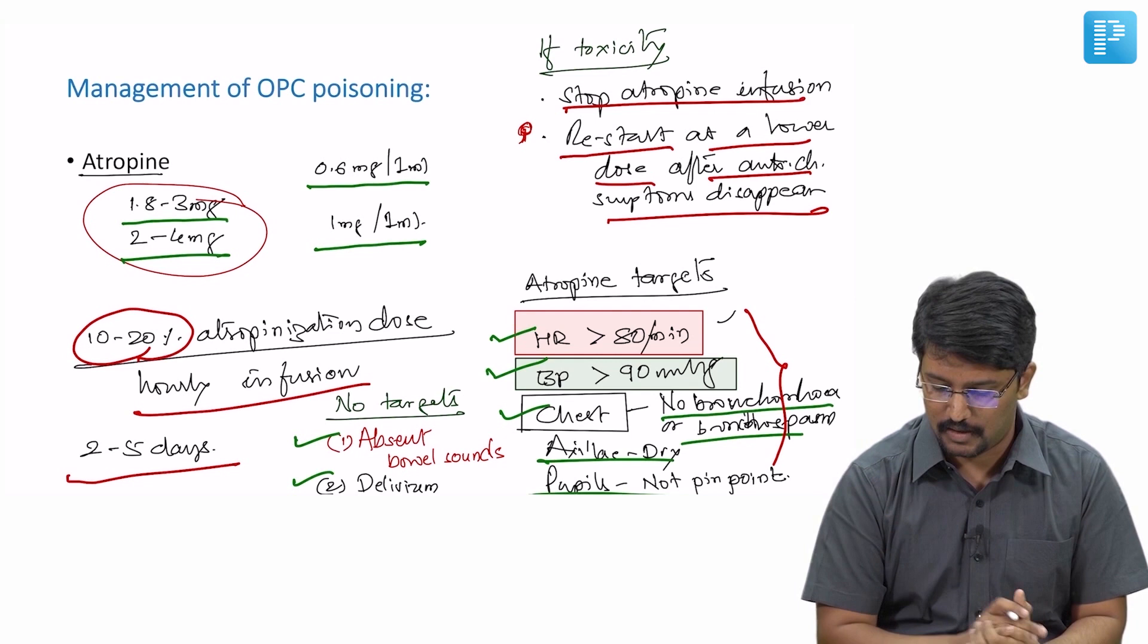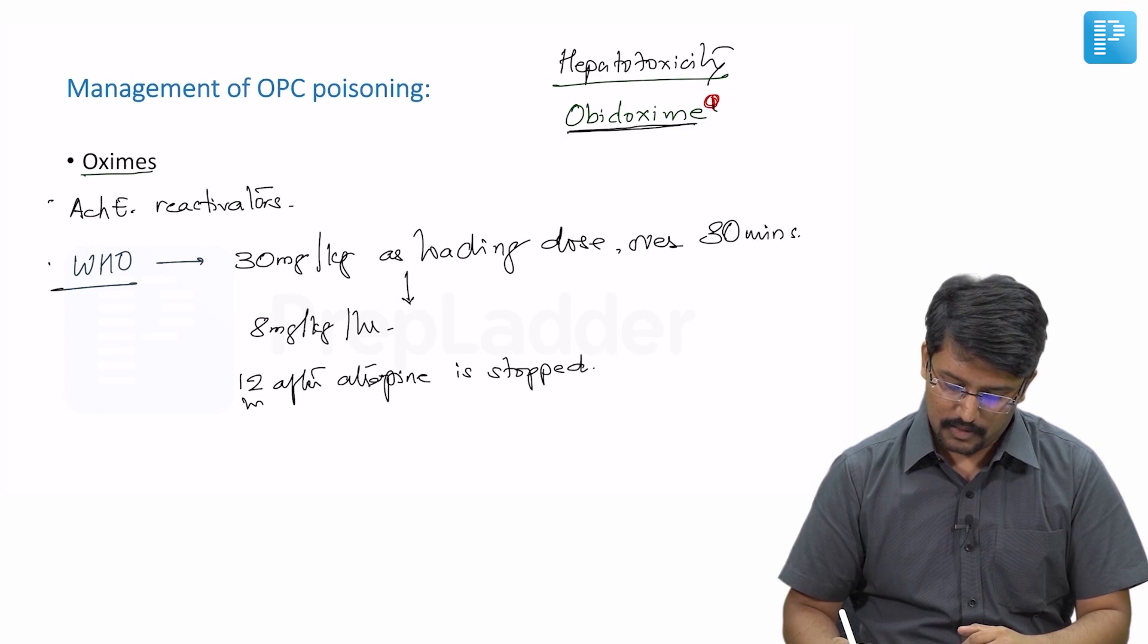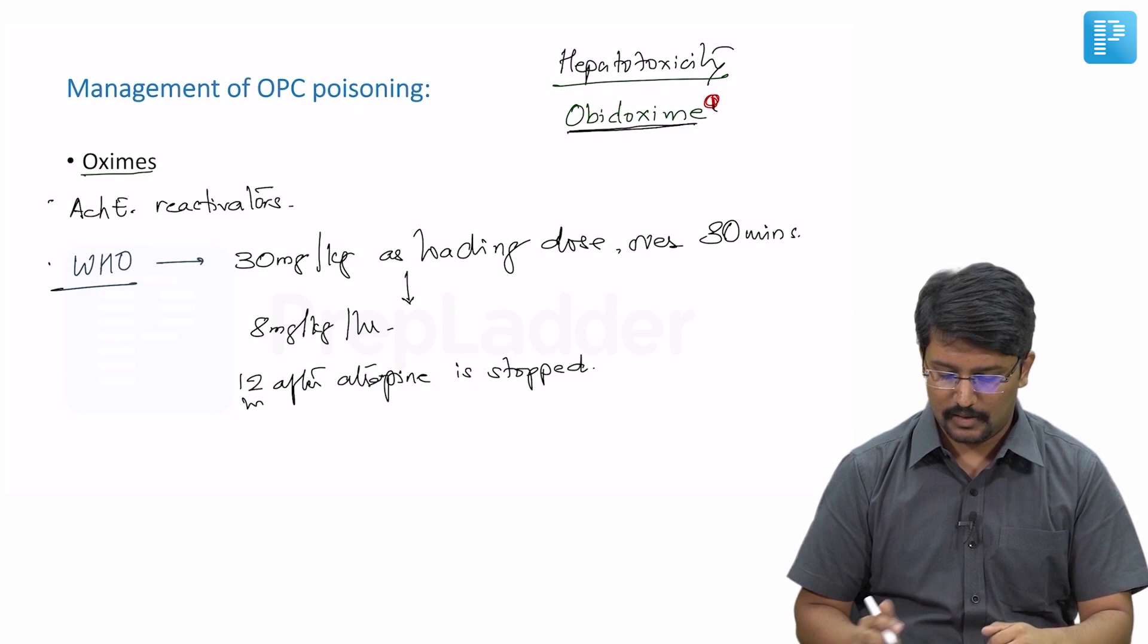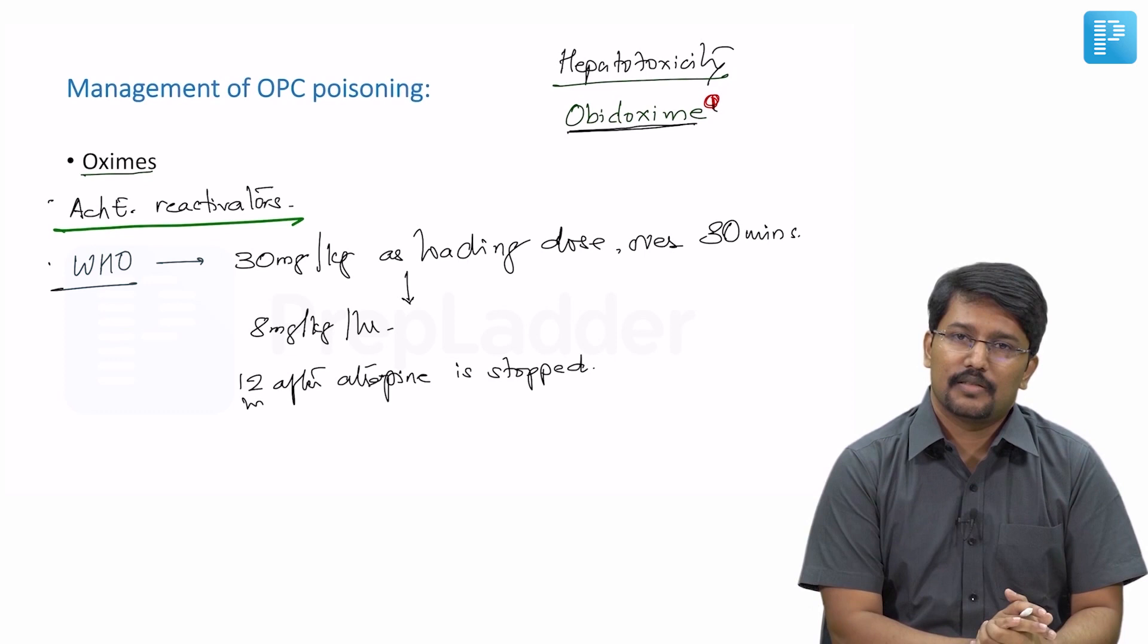Then comes the question of other drugs. So oximes, you are all aware, it continues to be used as an important drug for management of organophosphate poisoning. Chemically, oximes are acetylcholinesterase reactivators. But of late, there are a lot of concerns with respect to use of oximes.